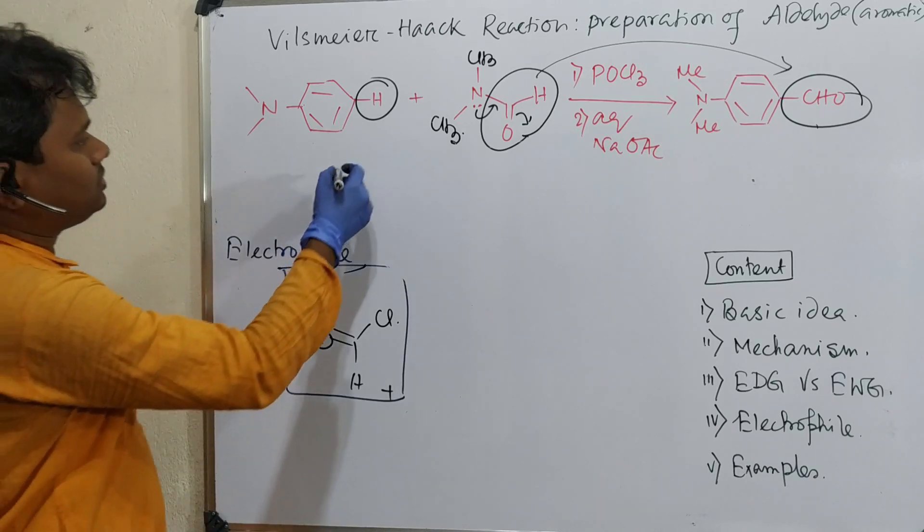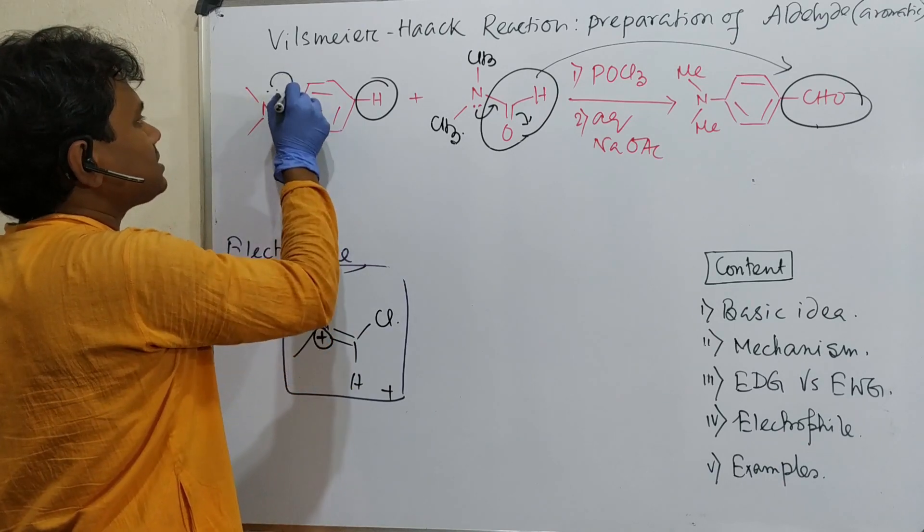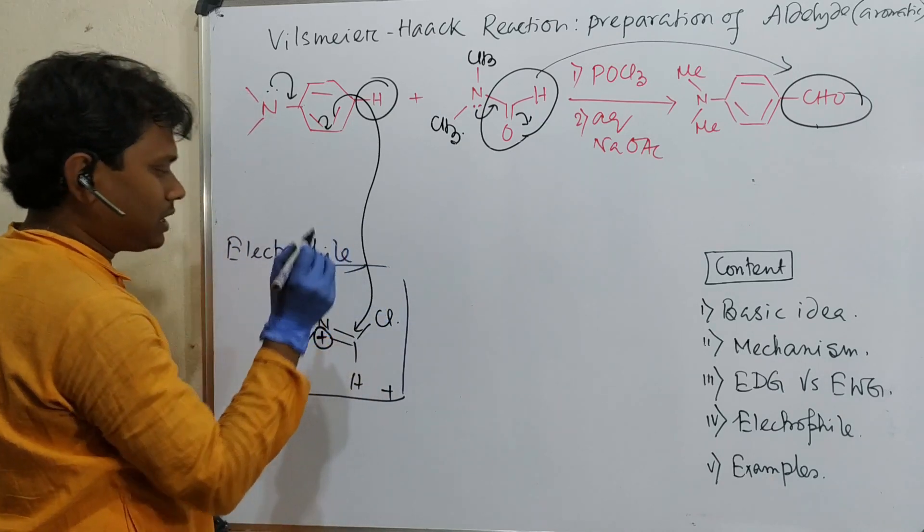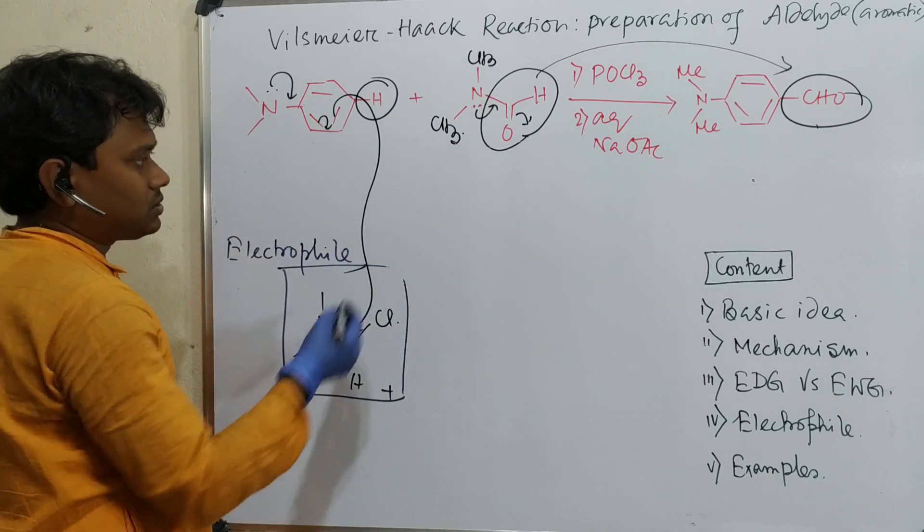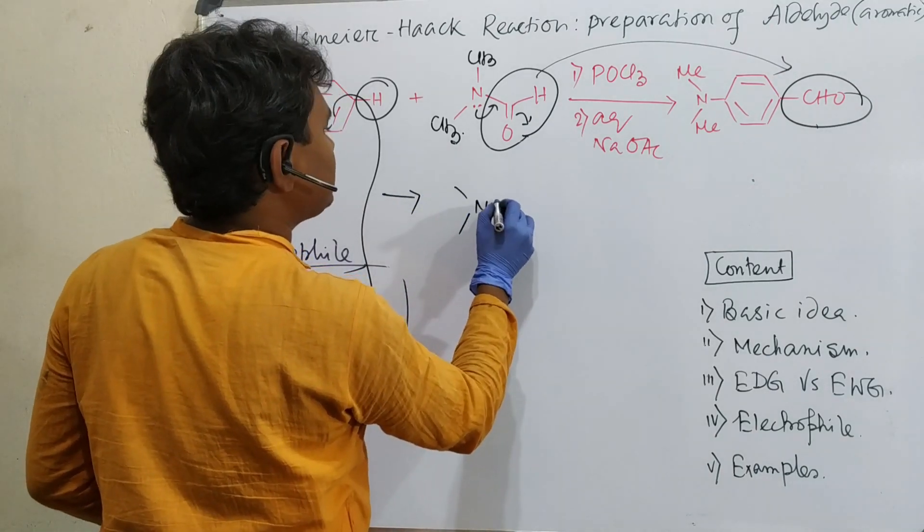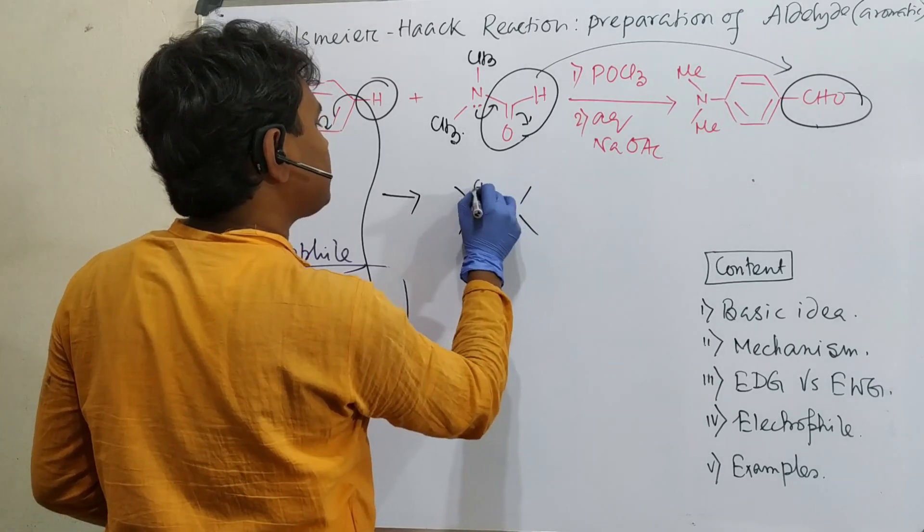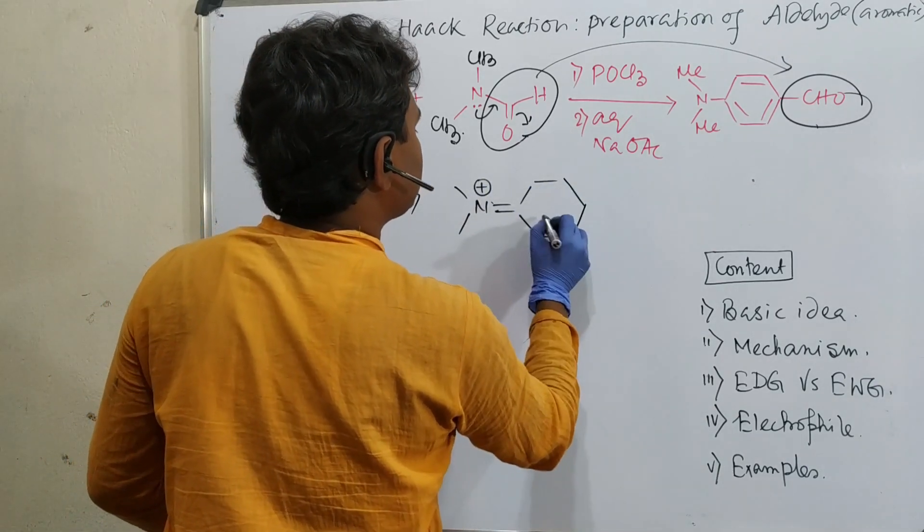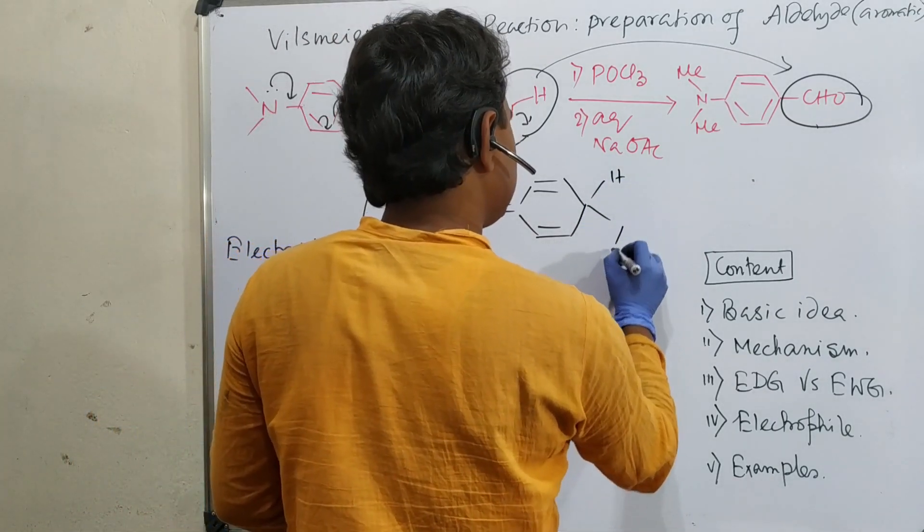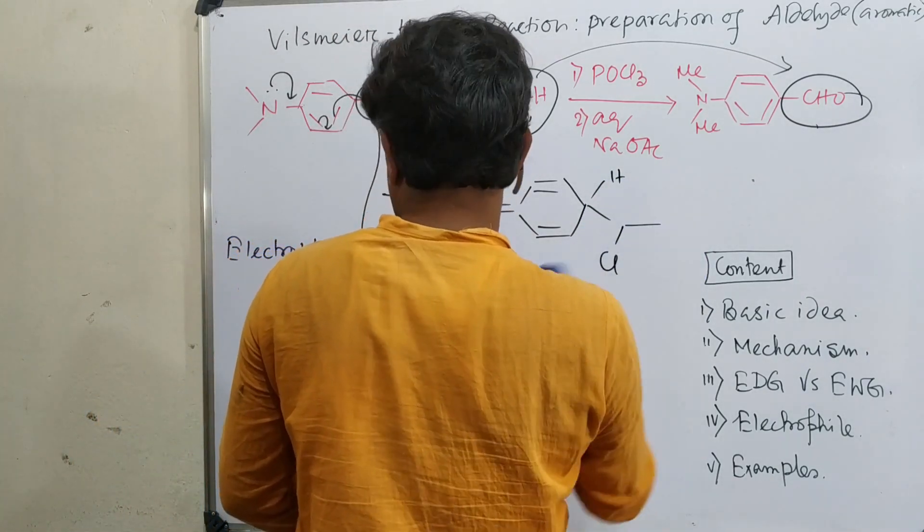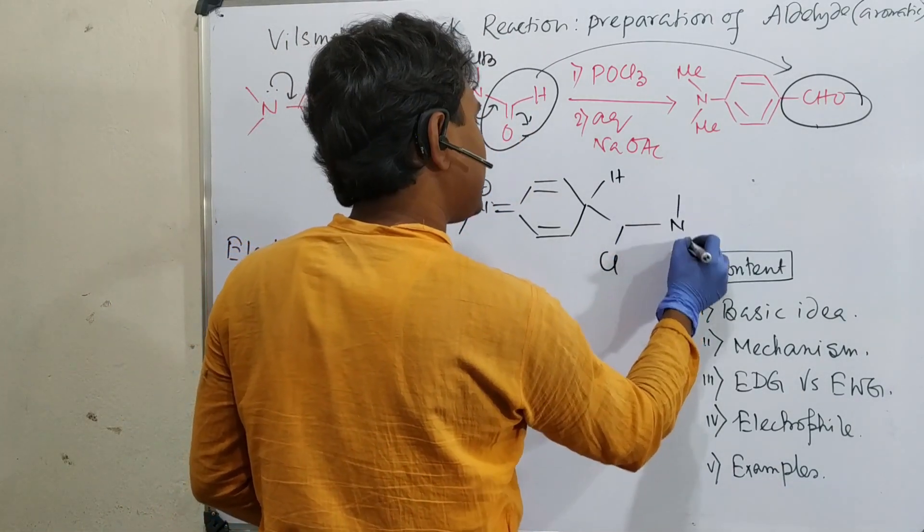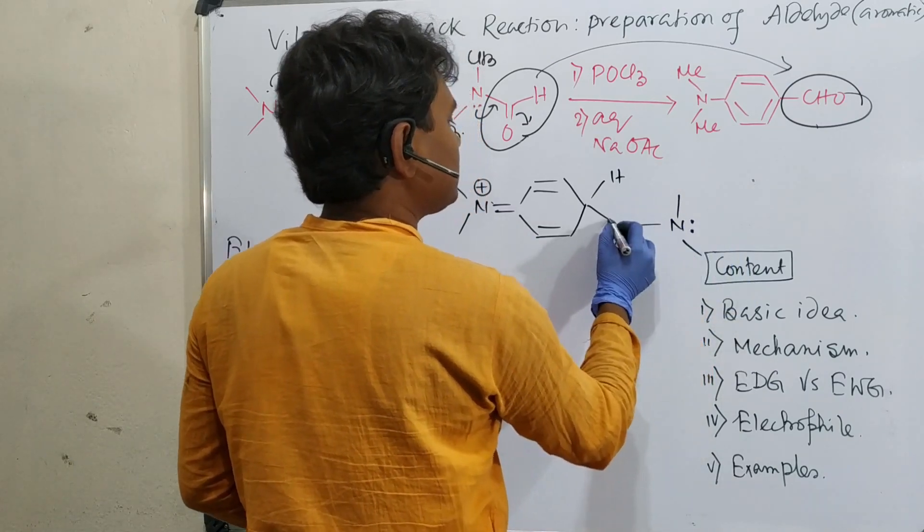Now let's react these two. The aromatic ring will push electrons from para position and attack the electrophile. The intermediate will have nitrogen with positive charge. This carbon will have H and the CHO group with Cl. This bond will open, giving nitrogen with its lone pair.